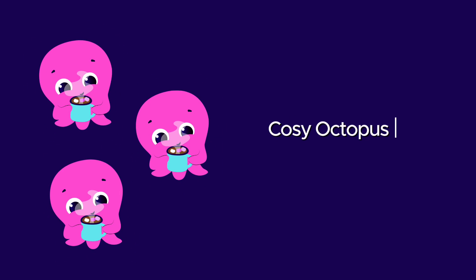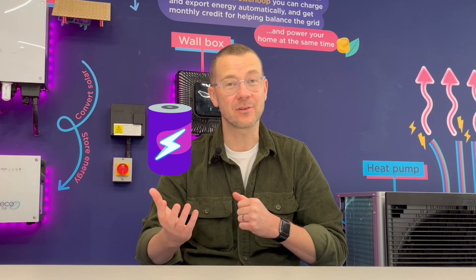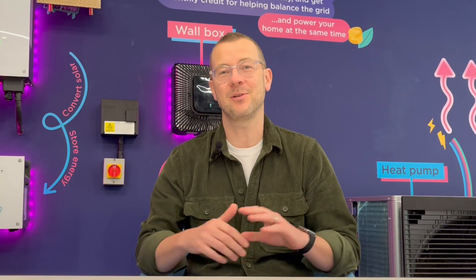All of our customers that have been on the Cozy Octopus tariff for at least 12 months have saved 20% on the unit price of their electricity on average compared to our standard flexible Octopus tariff. And those who had other green tech like a battery, for example, made savings of up to 27%. So if you do choose to get a heat pump, switching to a smart heat pump tariff is an absolute no-brainer.